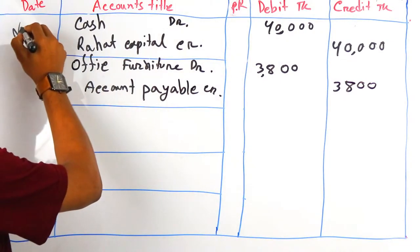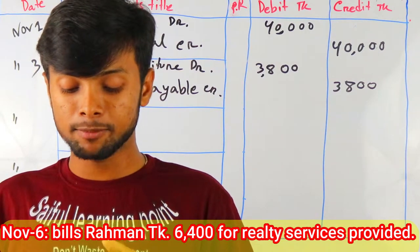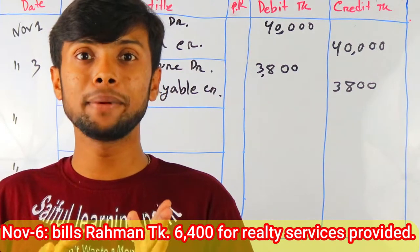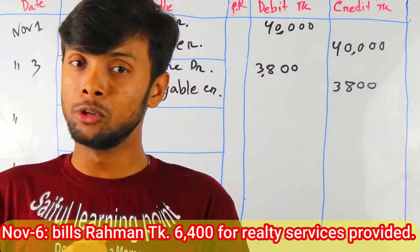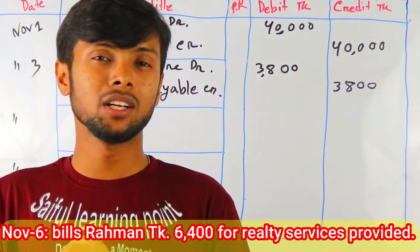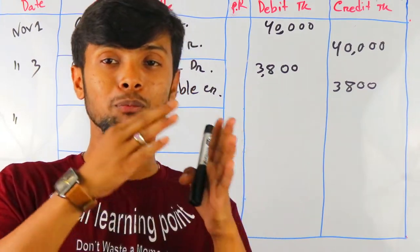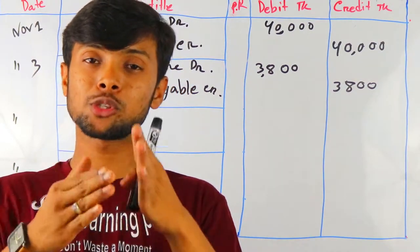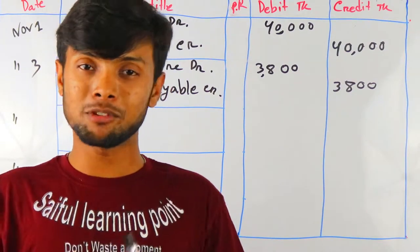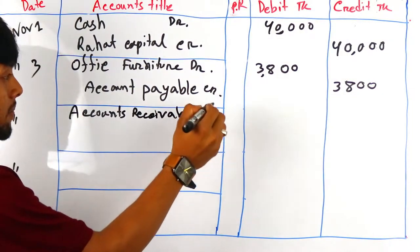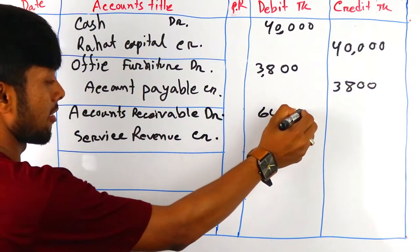Credit cash taka 6,400 for service provided. Service has been provided but no bill has yet been collected. Suppose you are an institution — you have provided the service, so your revenue has increased. When revenue increases, it is credited. But you haven't received the cash yet — you will receive it later. So, accounts receivable debit — because it is an asset. You have to write accounts receivable debit and service revenue credit, 6,400.